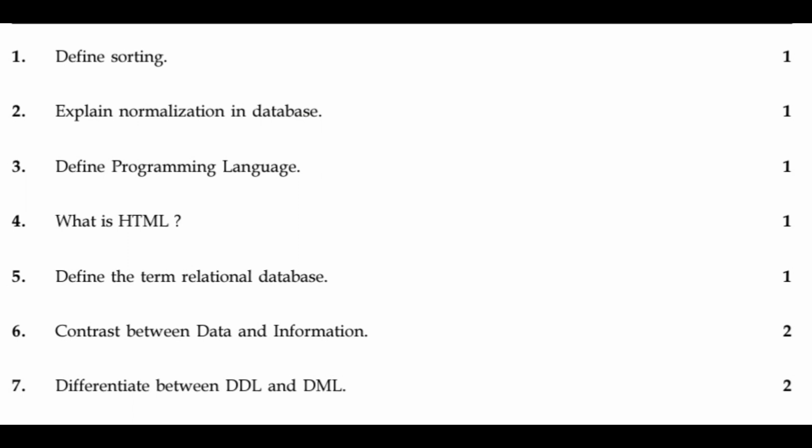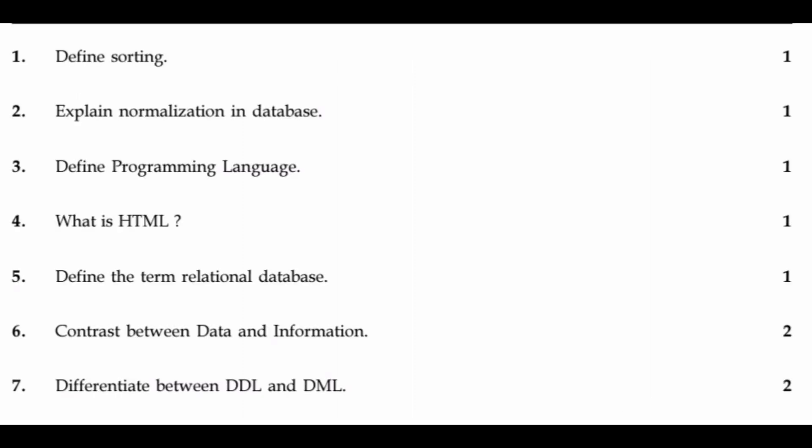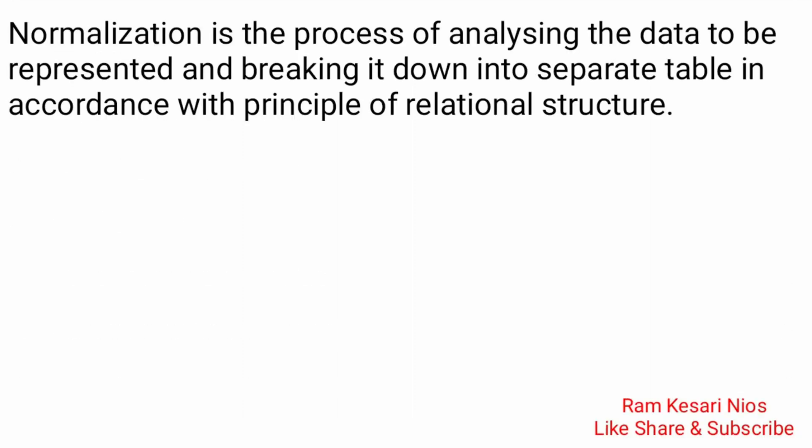Question 1: Define sorting. Arrange the elements of a list in ascending or descending order. Question 2: Explain normalization in database. Normalization is the process of analyzing the data to be represented and breaking it down into separate tables in accordance with the principles of relational structure.